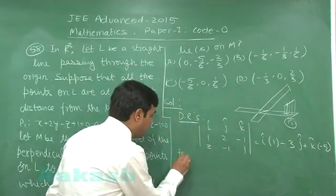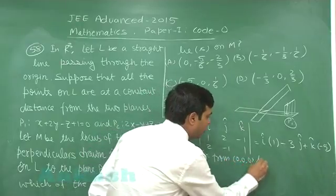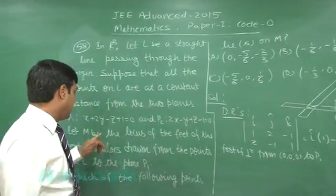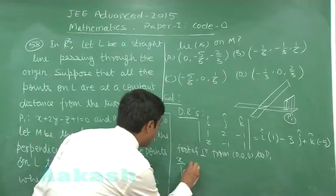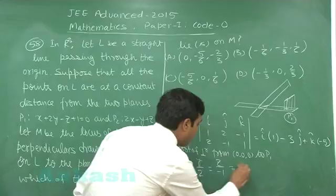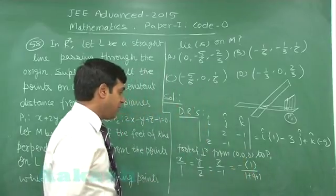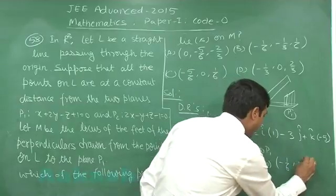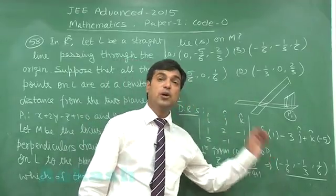We can also find the foot of the perpendicular from (0,0,0) to P1, where P1 is x + 2y − z + 1 = 0. This gives x/1 = y/2 = z/(−1) = −(0 + 0 − 0 + 1)/(1 + 4 + 1). We observe that the foot of the perpendicular from (0,0,0) to plane P1 comes out as (−1/6, −1/3, 1/6).